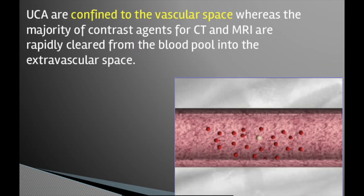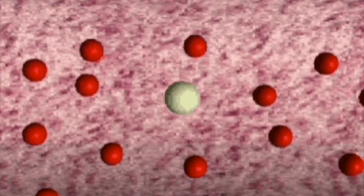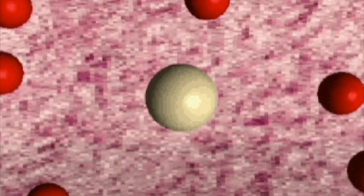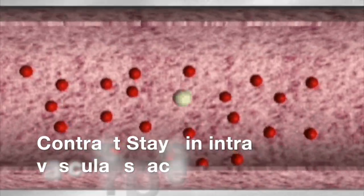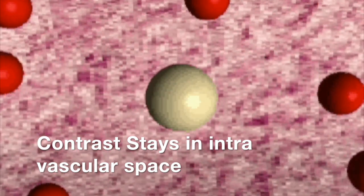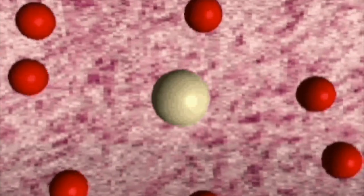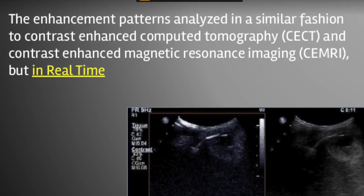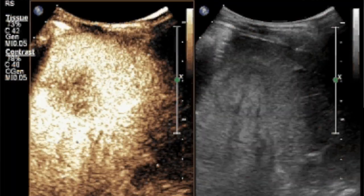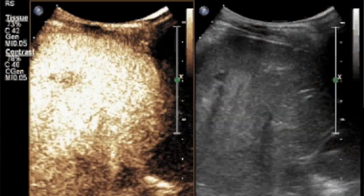The difference between CT and MR contrast agents and ultrasound contrast agents is that the contrast agents in ultrasound are confined to the intravascular space, whereas in CT and MR they pool into the extravascular space. The advantage of contrast ultrasound is that we are able to analyze these structures in real time, so the entire study can be done in real time and we can demonstrate these lesions much better.